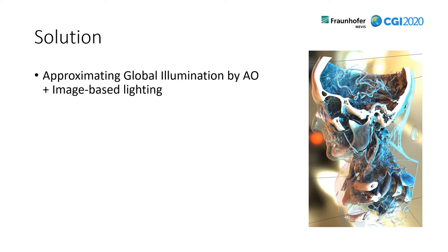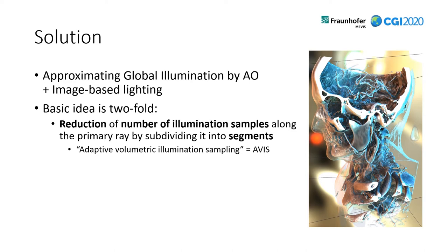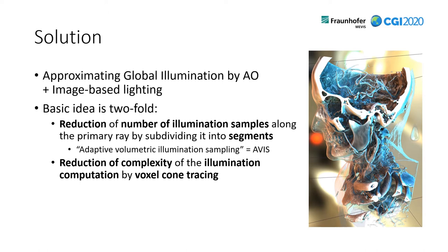Our solution is to approximate global illumination by a combination of ambient occlusion and image-based lighting. The basic idea is two-fold: on one hand we want to reduce the number of illumination samples along the primary ray by subdividing it into segments — this also yields the name of the sampling methodology, Adaptive Volumetric Illumination Sampling, or ARVIS. On the other hand, we also want to reduce the complexity of the illumination computation by employing voxel cone tracing.